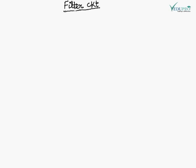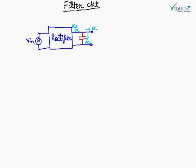To get a pure DC, we need a filter circuit at the output of a rectifier circuit. The output of a rectifier circuit contains AC plus DC.